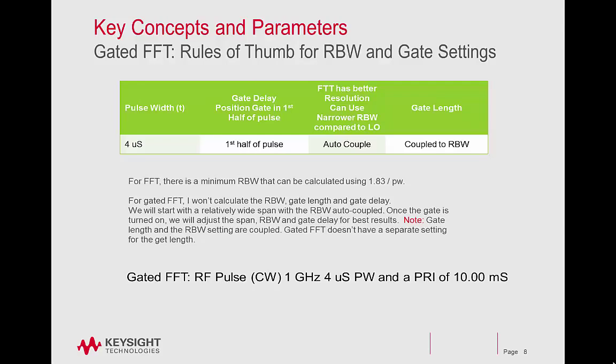We will start with a relatively wide span with the RBW autocoupled. Once the gate is turned on, we will adjust the span, RBW, and gate delay for best results. Note, in gated FFT, gate length and the RBW setting are coupled. Gated FFT doesn't have a separate setting for the gate length.